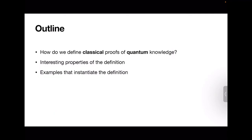This is the rough outline of the presentation, which is also the rough outline of the paper. In this paper, we're interested in defining classical proofs of quantum knowledge. After we define these objects, we're going to show some properties of the definition which have simple proofs, and then finally we want to show an example that instantiates the definition.